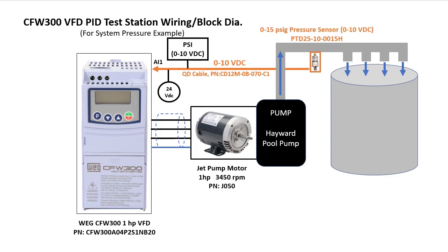I added a process meter here so we can see what the pressure is while we change the speed of the motor. Since it's just a 0 to 10 volt signal we could use a voltmeter here, but the process meter is nice because we can set it up to display psi instead of voltage.